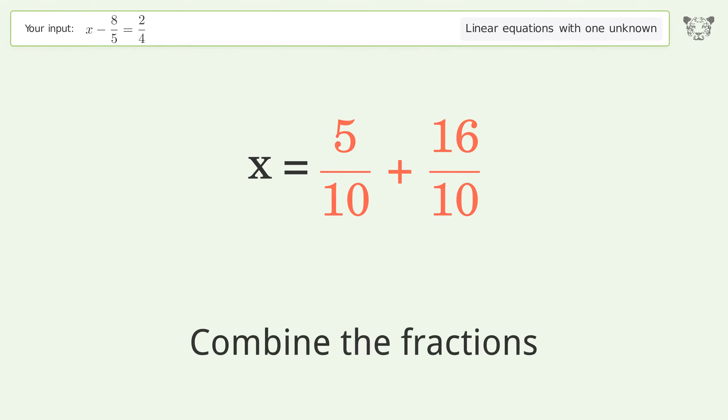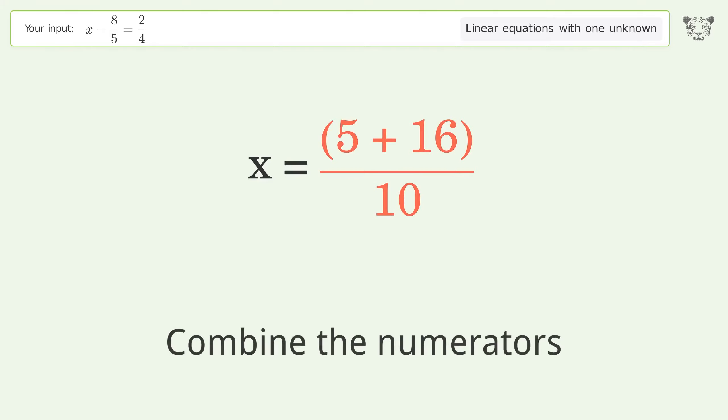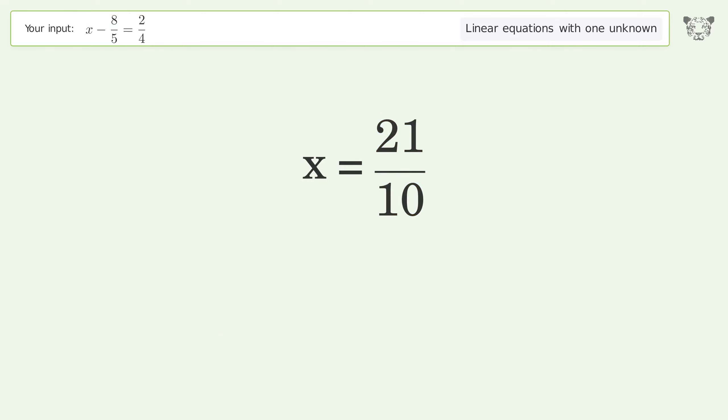Combine the fractions. Combine the numerators. And so the final result is x equals 21 over 10.